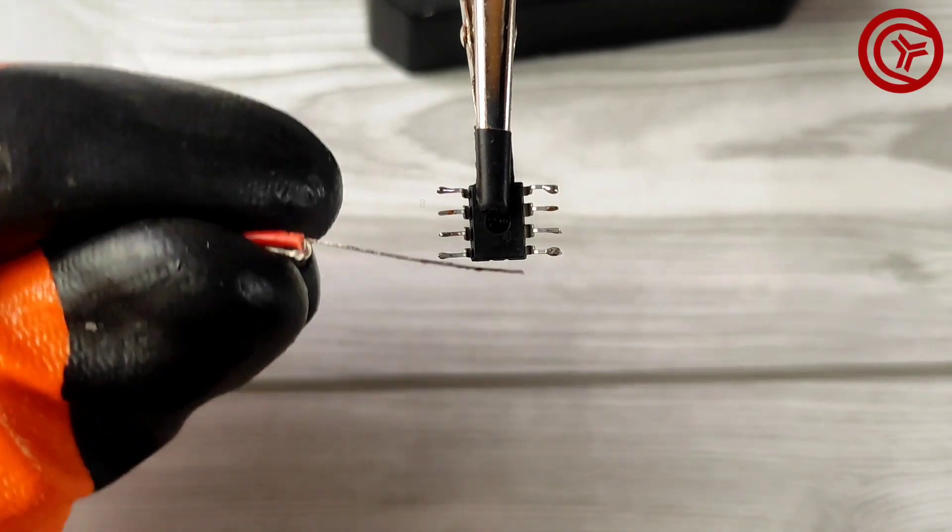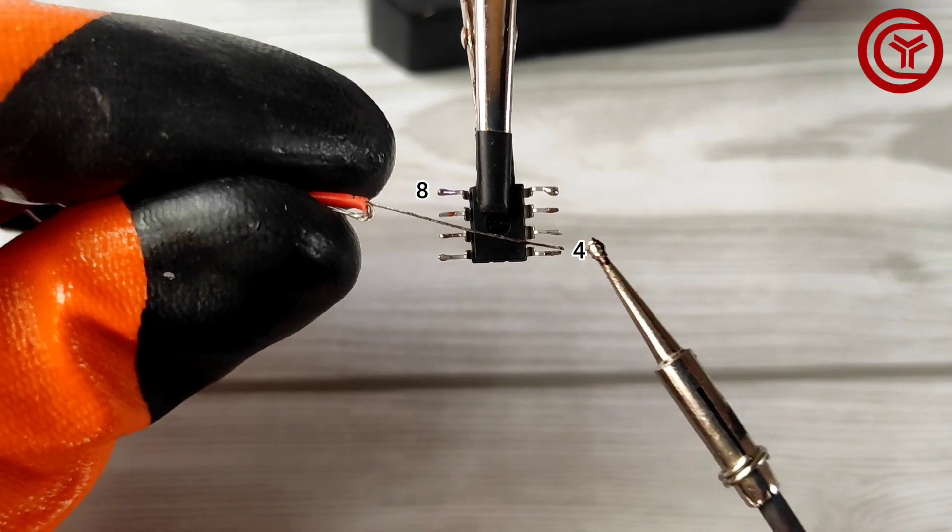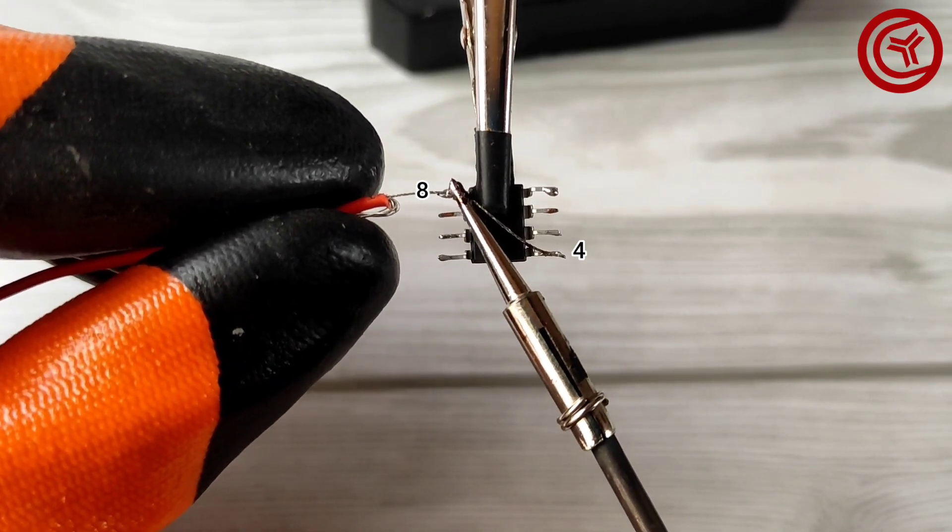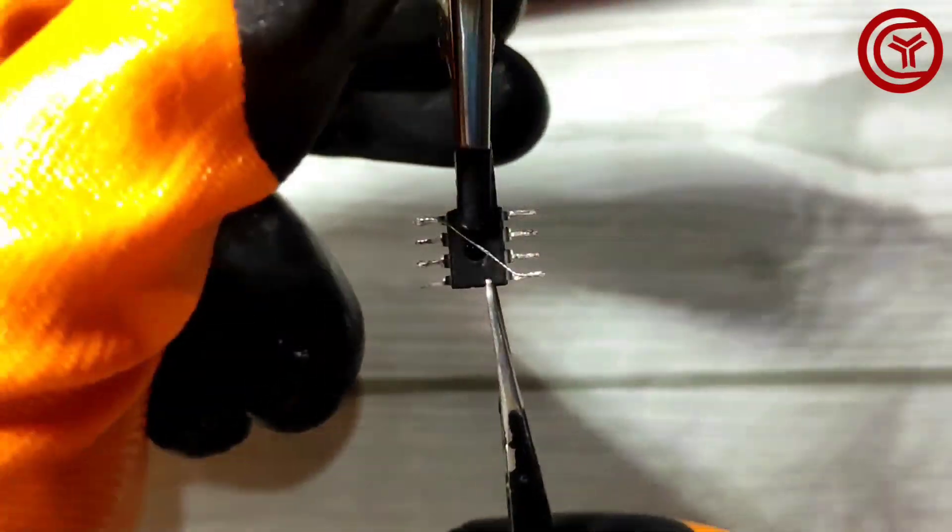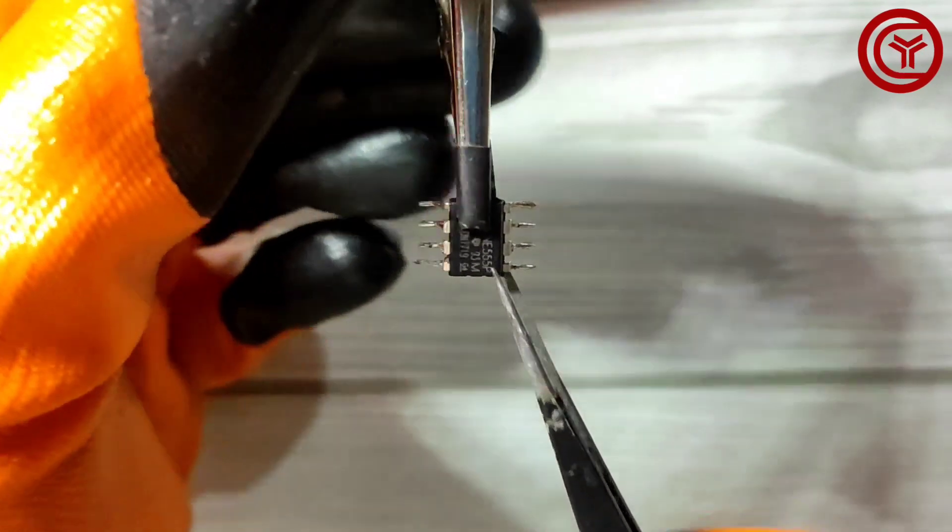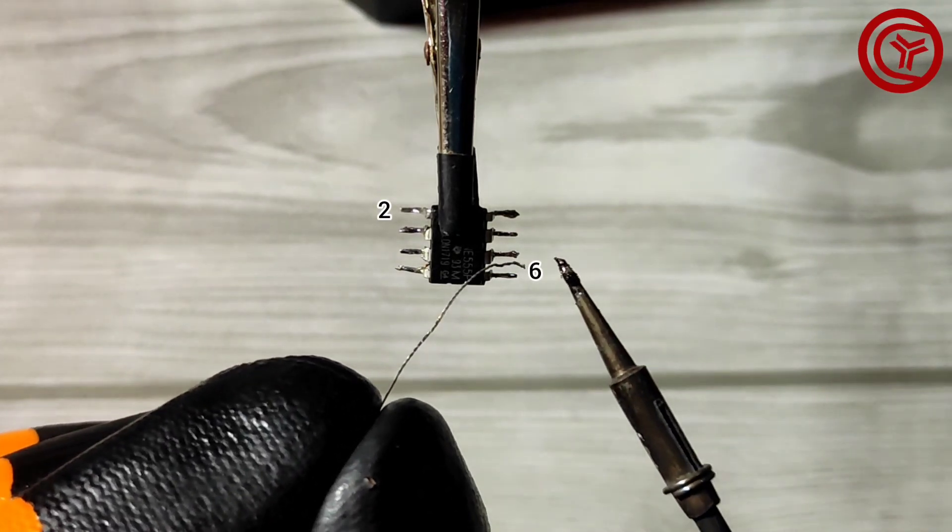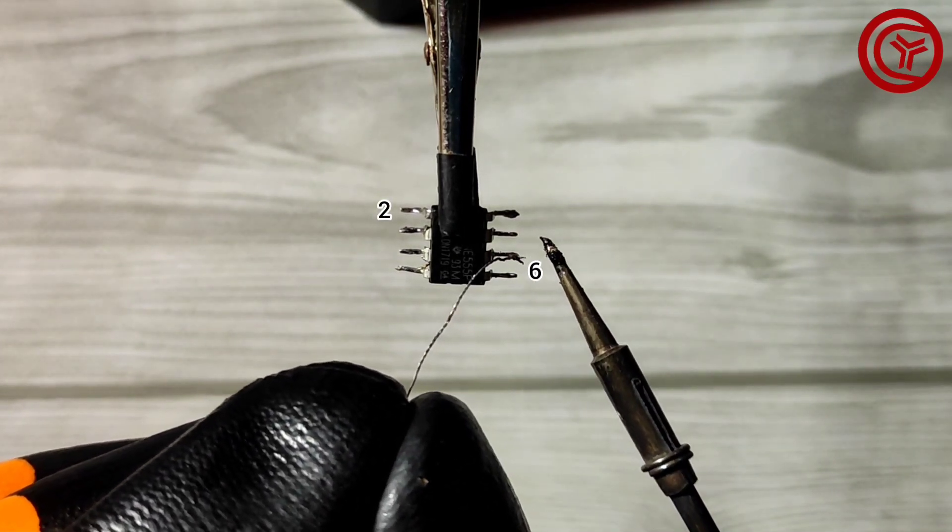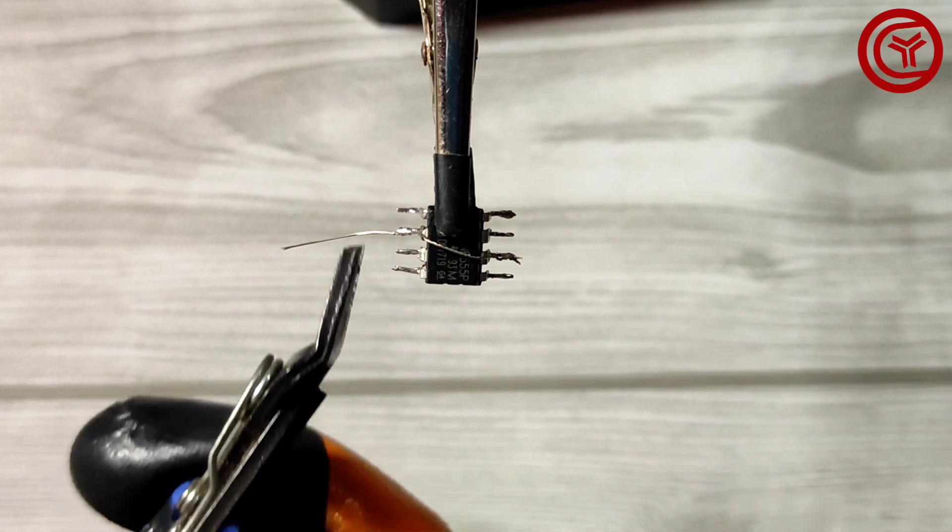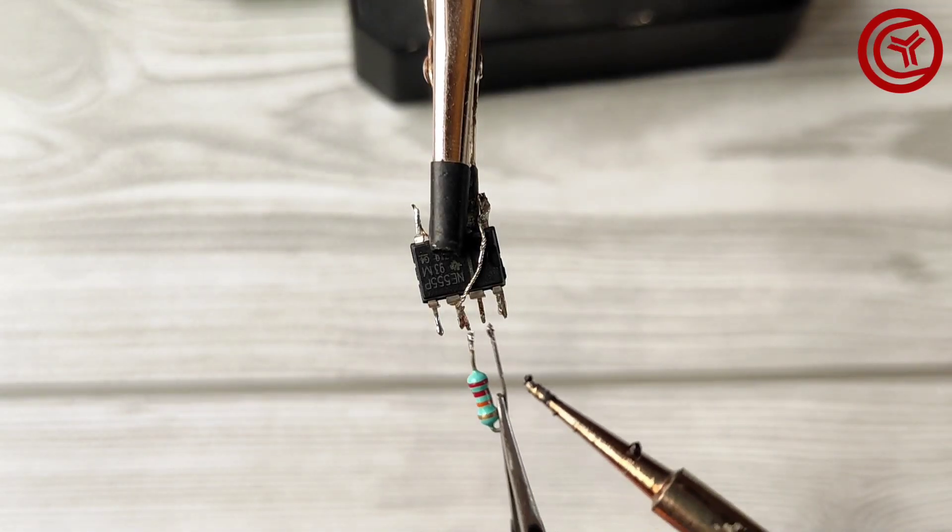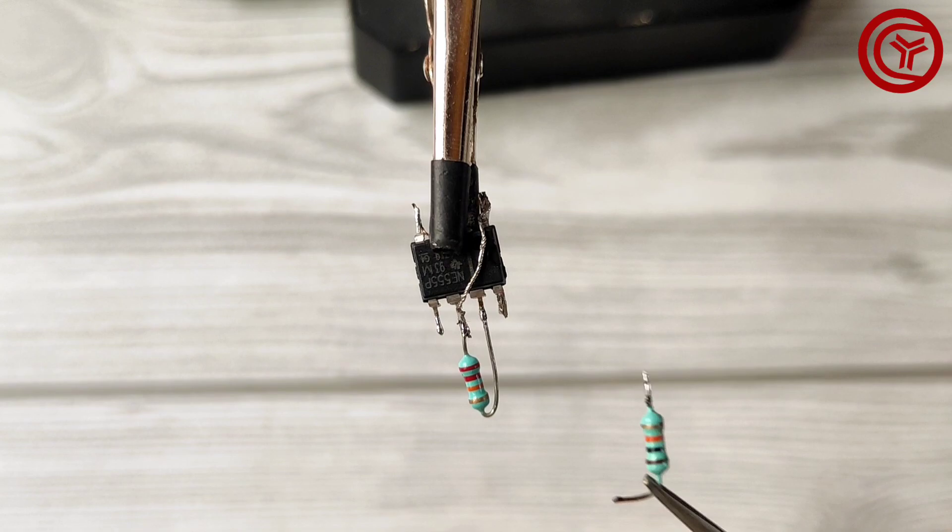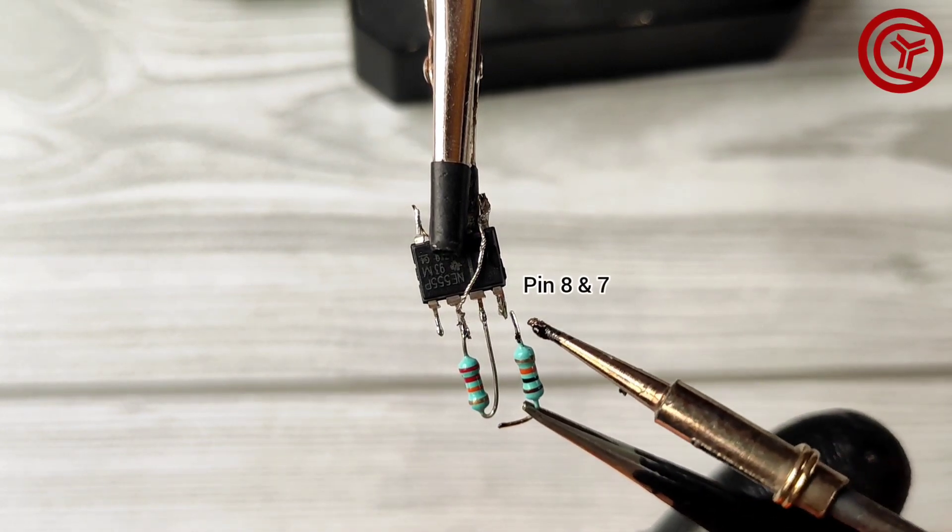Solder a jumper wire and connect pins 4 and 8. With jumper wire also connect pins 6 and 2. Now solder 22 kiloohms resistor on pins 7 and 6. Also solder 10 kiloohms resistor on pins 8 and 7.